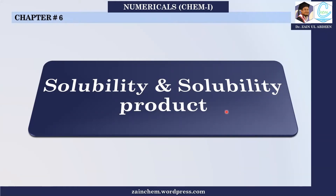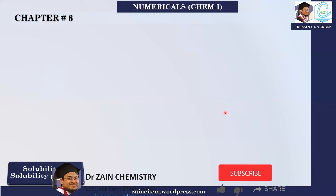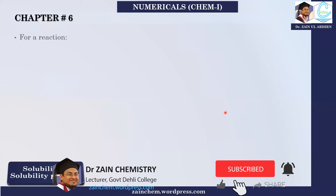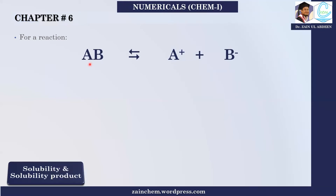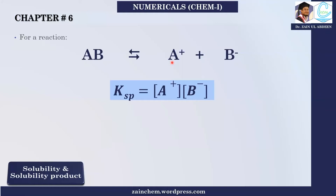Solubility or Solubility Product. If there is a reaction where AB is a sparingly soluble salt, when it dissociates, it will be converted to A positive ion and B negative ion. When dissolved in water or any solvent, it breaks into an ionized form.